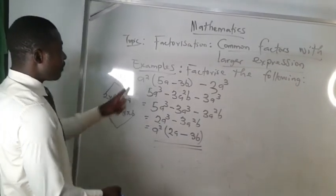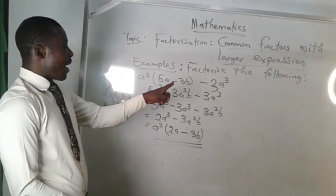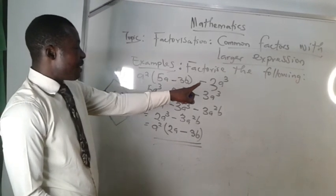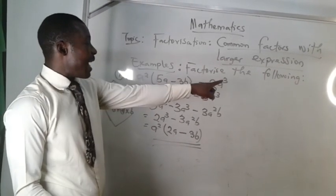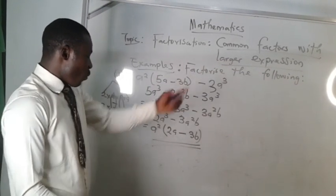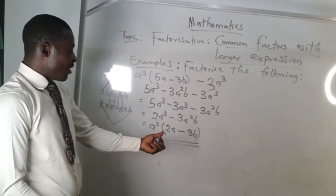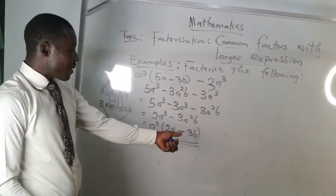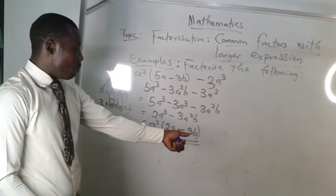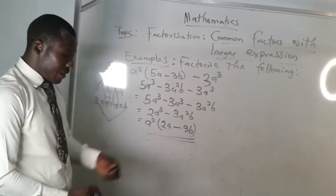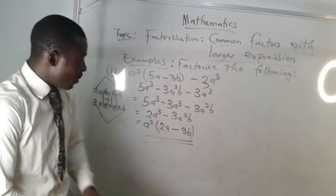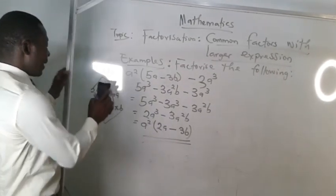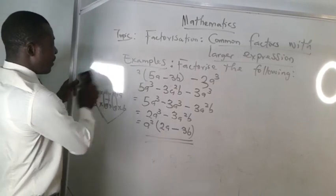So a squared into five a minus three b, minus three a cubed gives us a squared into two a minus three b. That's example number one. Let's take another example.